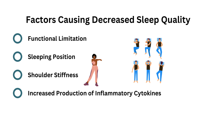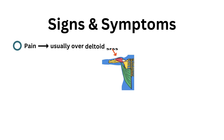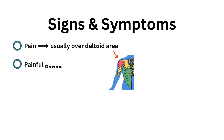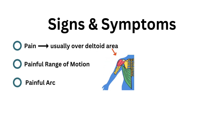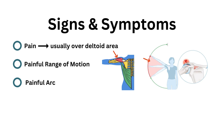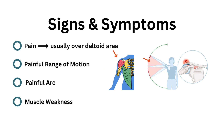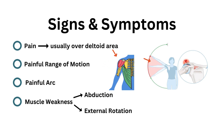The most common signs of rotator cuff injuries are pain usually over the deltoid area, painful range of motion, painful arc where pain occurs above shoulder height, and muscle weakness particularly during abduction and external rotation.